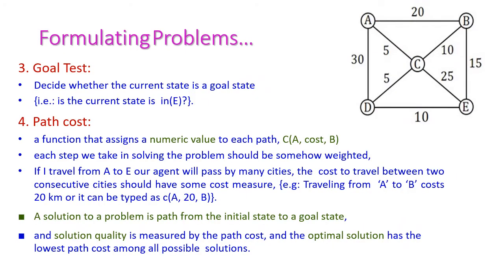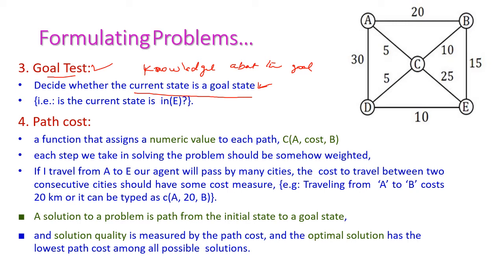The third component is goal test, which decides whether the current state is the goal state or not. We should have knowledge about the goal previously so we can test whether the successor node is the goal node. For every state, we need to test whether the current state is E or not — we should know that state E is the goal state.